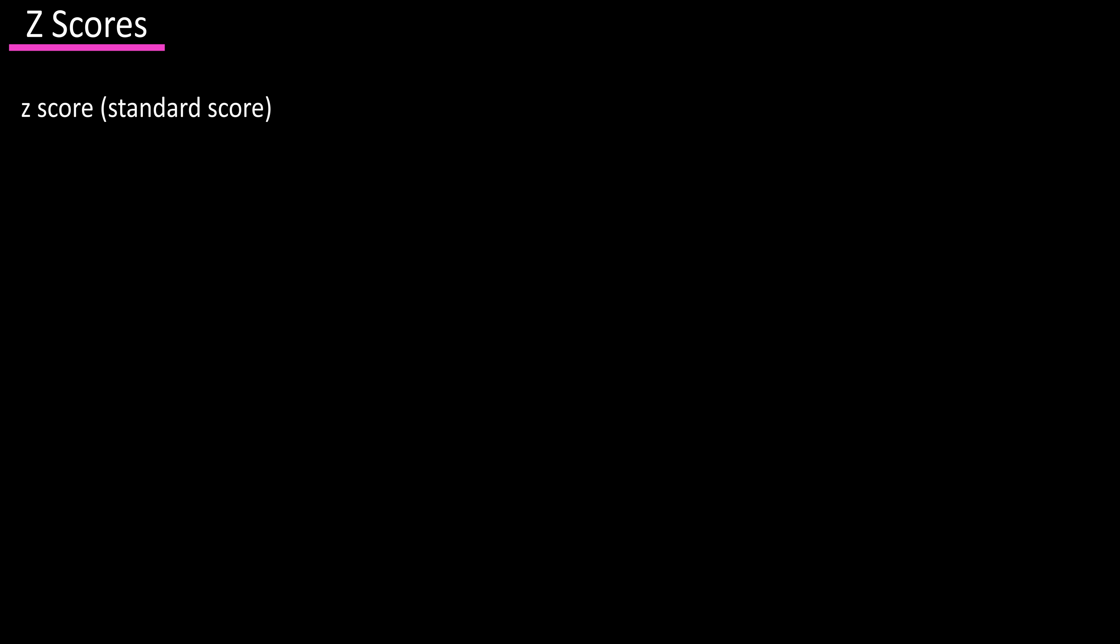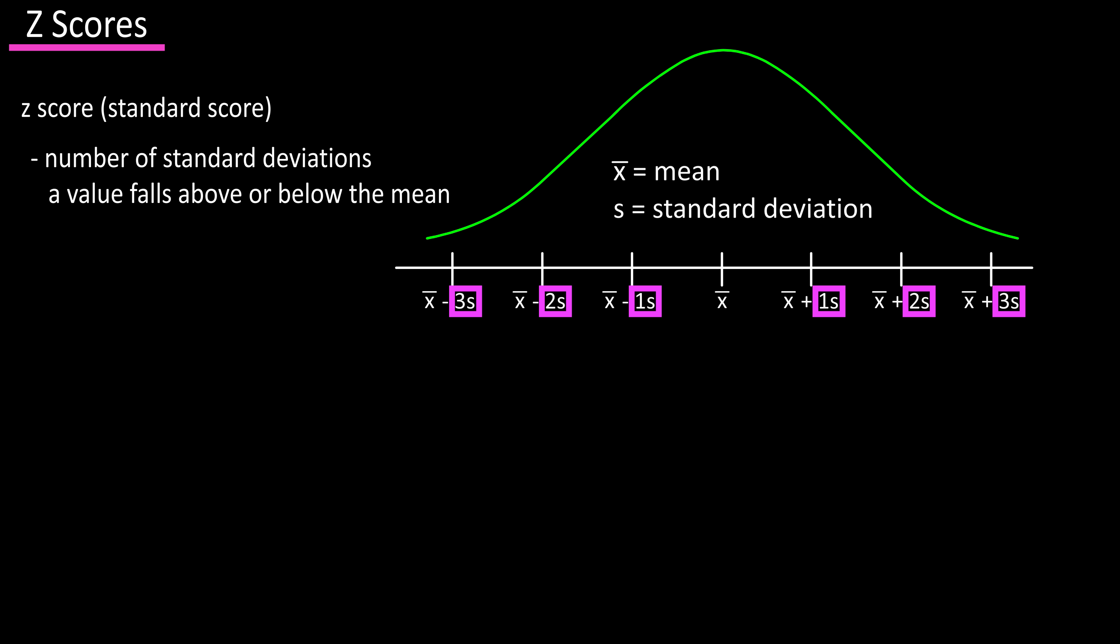A z-score or standard score for a value is the number of standard deviations that value falls above or below the mean.